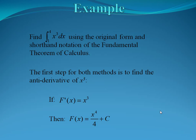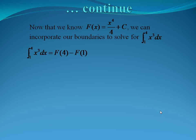Suppose we want to find the integral from one to four of x cubed dx, using both the original form and the shorthand notation of the fundamental theorem of calculus. The first step for both methods is to find the antiderivative of x cubed. So we know that if f prime of x equals x cubed, then the antiderivative will be x to the fourth over four, plus c.